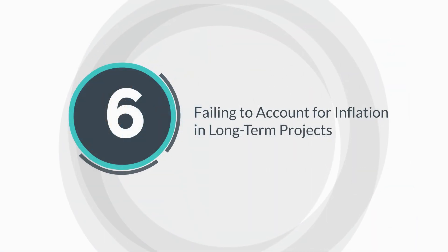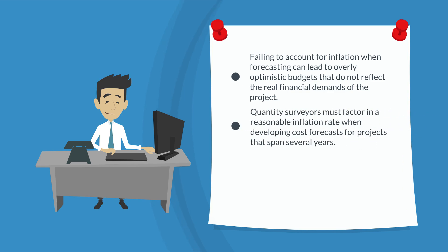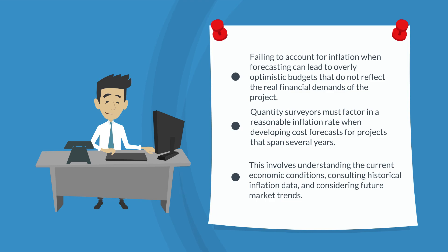Mistake six: failing to account for inflation in long-term projects. In long-term construction projects, inflation can significantly impact costs over time. Failing to account for inflation when forecasting can lead to overly optimistic budgets that do not reflect the real financial demands of the project. As prices for materials, labour, and other resources rise over time, the initial estimates may fall short, resulting in budget overruns and financial strain. Quantity surveyors must factor in a reasonable inflation rate when developing cost forecasts for projects spanning several years. This involves understanding current economic conditions, consulting historical inflation data, and considering future market trends. By incorporating an inflation allowance into the forecast, quantity surveyors can help ensure the project's budget remains realistic and robust throughout its duration.